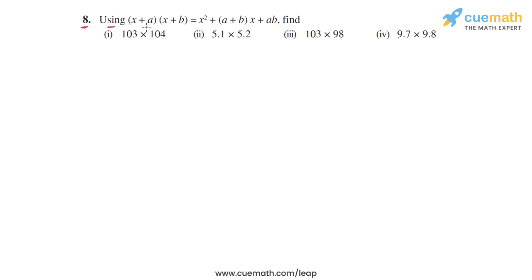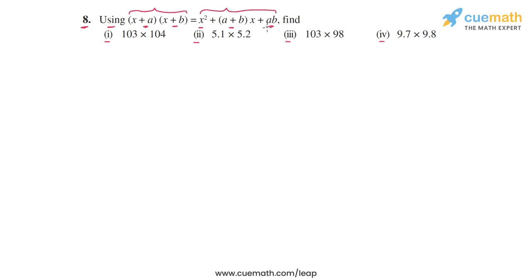In question 8 of this exercise, we have to use the identity (x + a)(x + b) = x² + (a + b)x + ab. We have to use this identity to find four products: 103 × 104, 5.1 × 5.2, 103 × 98, and 9.7 × 9.8. For each product, we will express it in the form (x + a)(x + b) and then apply the identity to calculate the product.